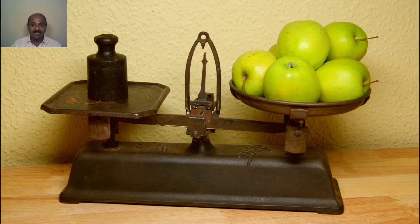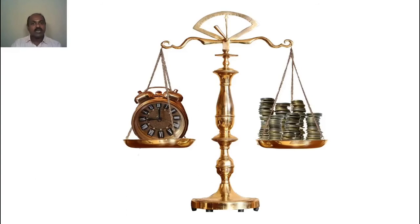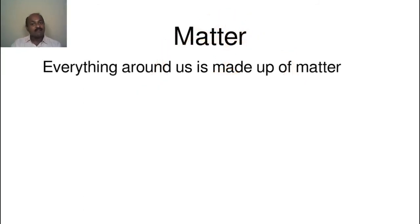Mass is a way of measuring the amount of matter in an object. In this case, the mass of all the particles that make up the clock is equal to the mass of all the coins on the other pan. Mass is always measured in kilograms and grams.